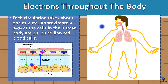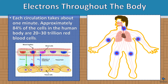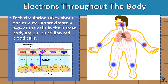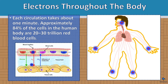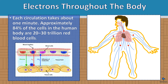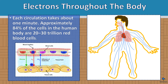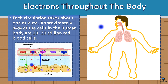Electrons throughout the body: each circulation takes about one minute. Approximately 84% of the cells in the human body are 20 to 30 trillion red blood cells. The ionized oxygen molecule is transferred into the tissue cells.